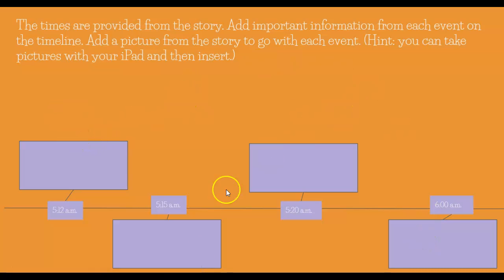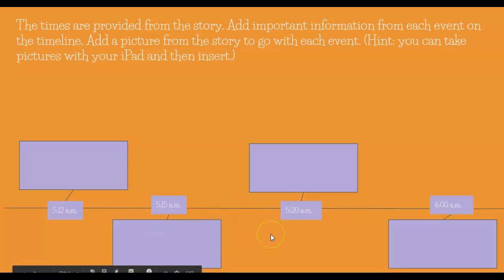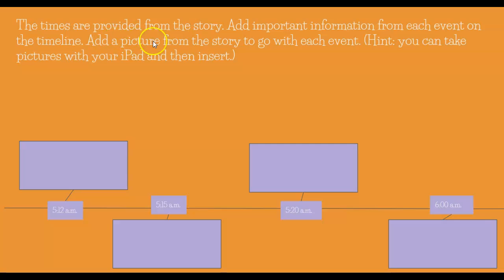Then you're going to add pictures — you can place them to the side, above, or below, but make sure they connect to the event. Hint: you can take pictures with your iPad and then insert the photo. If you want to take pictures from the book, you're welcome to do that. The times are provided from the story — add important information from each event on the timeline and a picture from the story to go with each event. Good luck today!